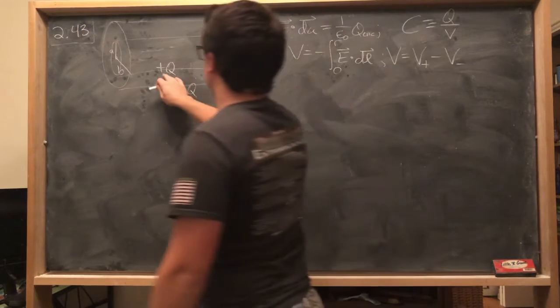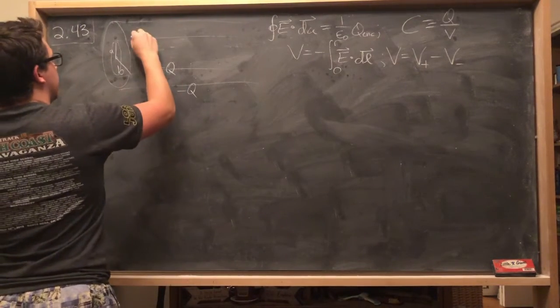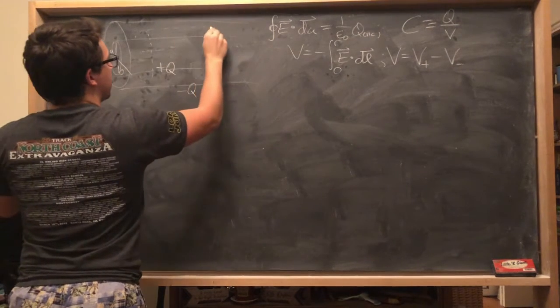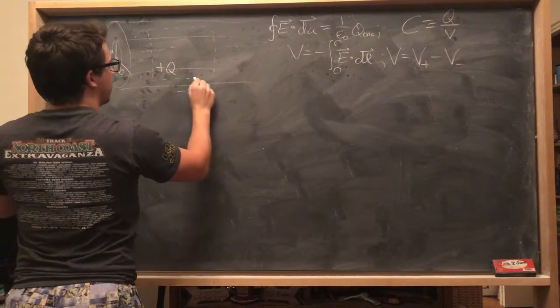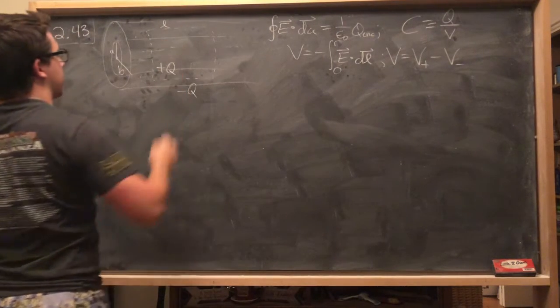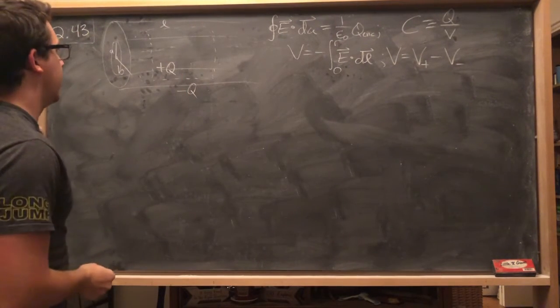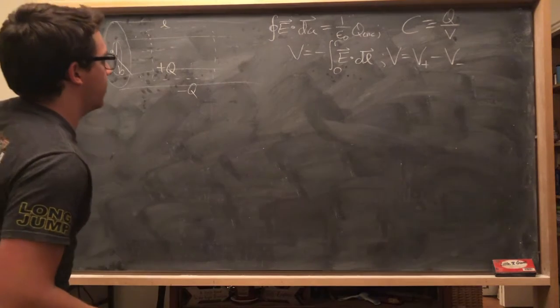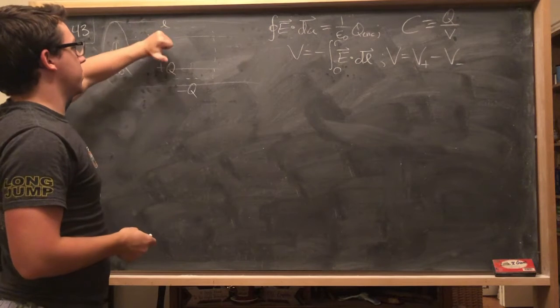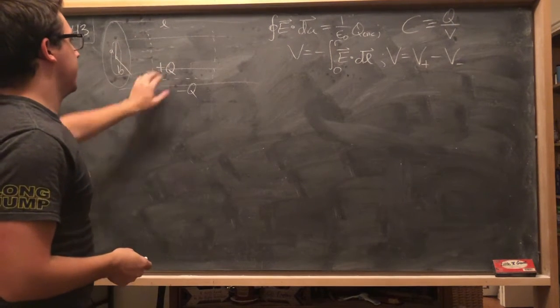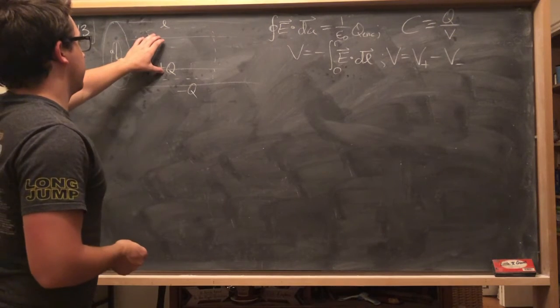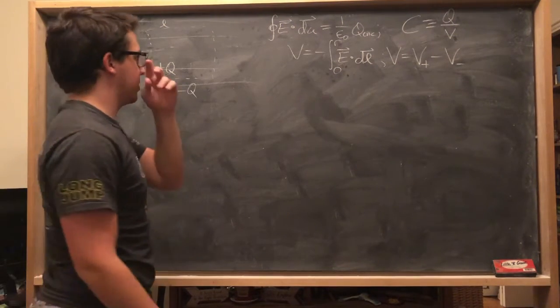So, let's choose our Gaussian surface. Like I said, I'm going to do a cylinder. We can imagine it's, say, length L. And let's go ahead and do this. So, again, our electric field, we expect it to be pointing regularly outward, based on the symmetry of the charge distribution and the symmetry of, well, just the symmetry of the charge distribution.